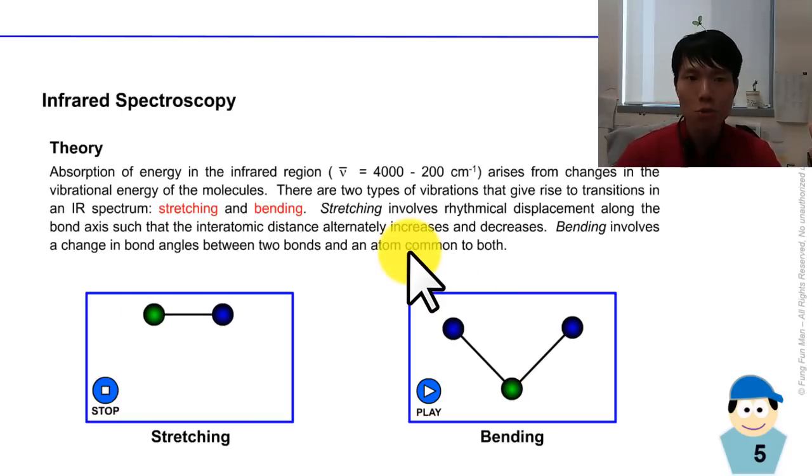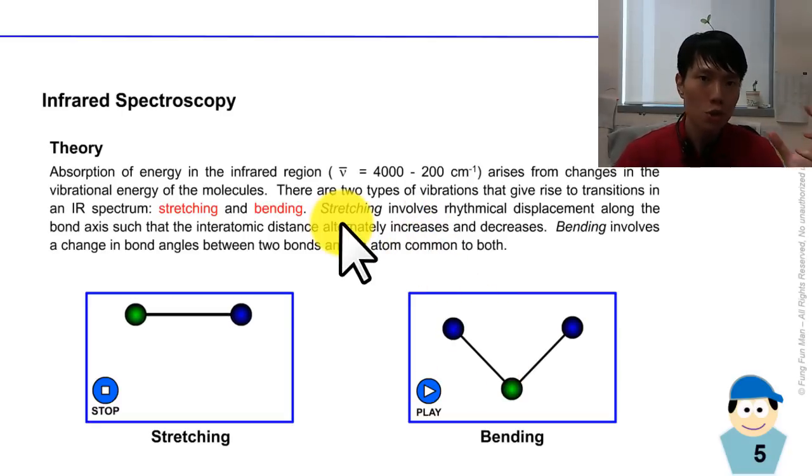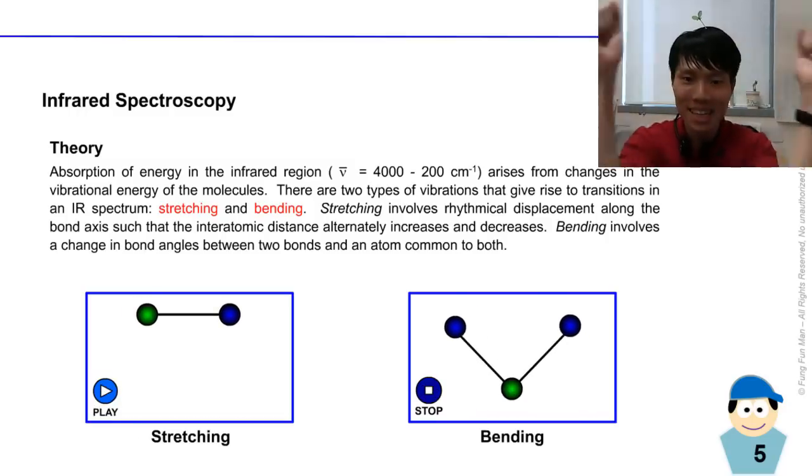In IR spectroscopy, it comes from the vibrational change. We mentioned just now what is stretching and bending. Maybe here in this animation you get a better picture. You see here, bond stretching - the balls moving away towards each other. And we can do a bond bending as well. Bending towards each other.